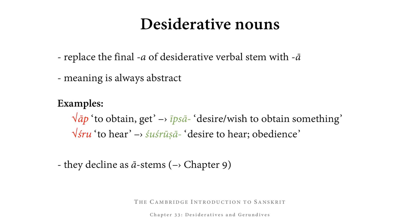Desiderative nouns, finally, are also formed from the same stem as desiderative verbs and adjectives, but the a at the end of a desiderative verb stem needs to be replaced with ā to get the desiderative noun. These desiderative nouns are declined as long ā-stems, which are introduced in Chapter 9, and their meaning is always abstract. So, for example, from āp (to get, to obtain), we get ipsā, the desire or wish to obtain something. From śru (to hear), we get śuśrūṣā, the desire to hear, a word used to mean obedience.